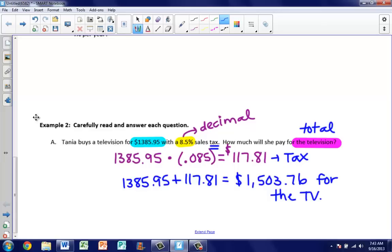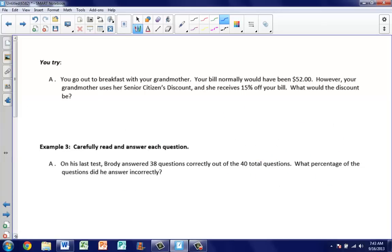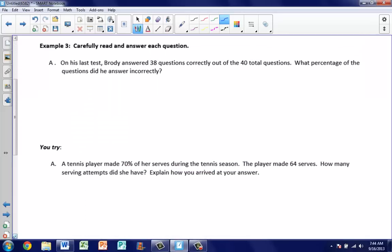If you take a look at our next example, flip your page. Now we have example number three. We want to make sure we're reading this carefully. On his last test, Brody answered 38 questions correctly out of a total of 40 questions. What percentage of the questions did he answer incorrectly? First, let's figure out how many he answered correctly first, because that's going to be easiest. You already know how to calculate this. All the time when you get quizzes and tests back and want to find out your grade, we always take the number of questions you got right divided by the total number of questions. When you do this, we get 0.95. That tells you that you got a 95% on your quiz. So you answered 95% of the questions correctly.